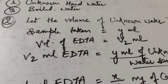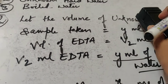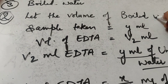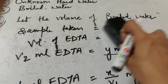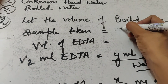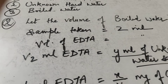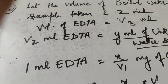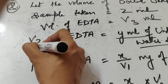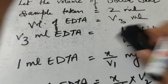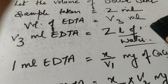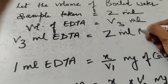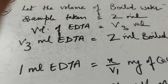After this, in the third step, the water we take is boiled water. Let the volume of boiled water taken be Z ml — so we take X, Y, Z for the three water samples. The volume of EDTA used to neutralize it is V3 ml. So V3 ml EDTA neutralizes Z ml of boiled water.